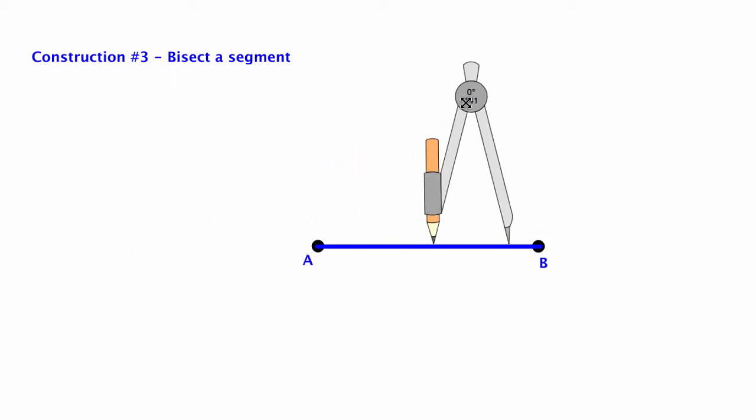The next construction is to bisect a segment. I'm going to take my compass and put it on one endpoint of the segment and open my compass up so the gap is wider than half the length.